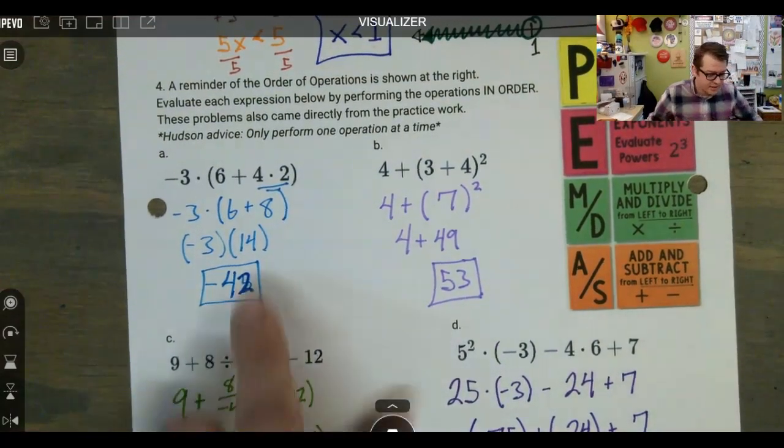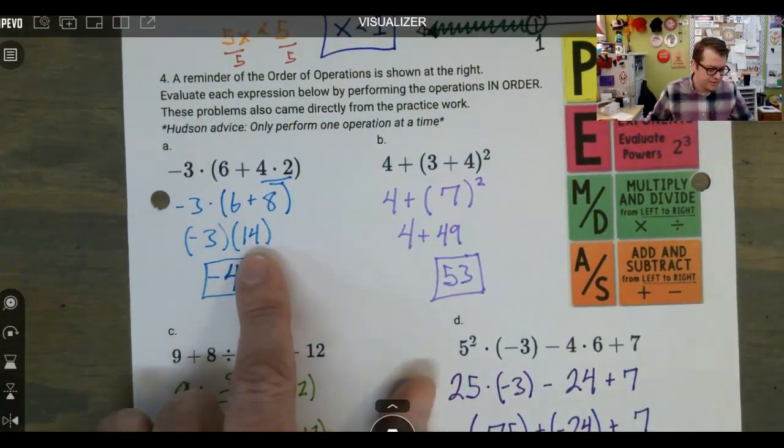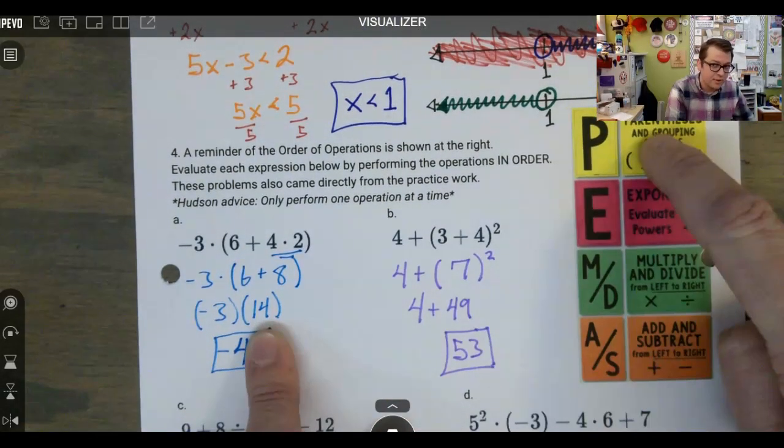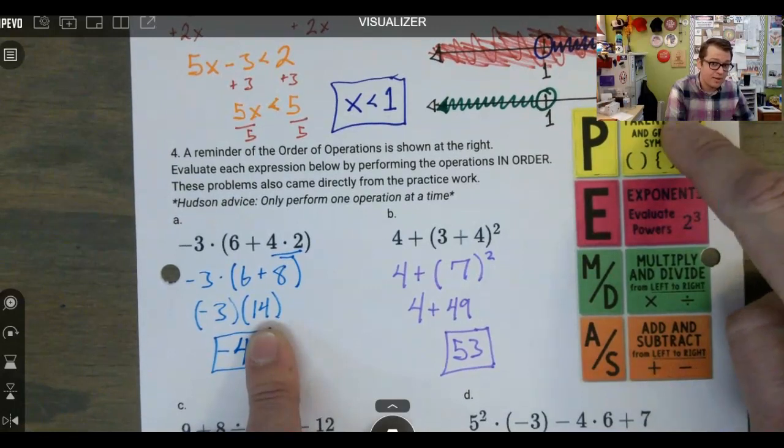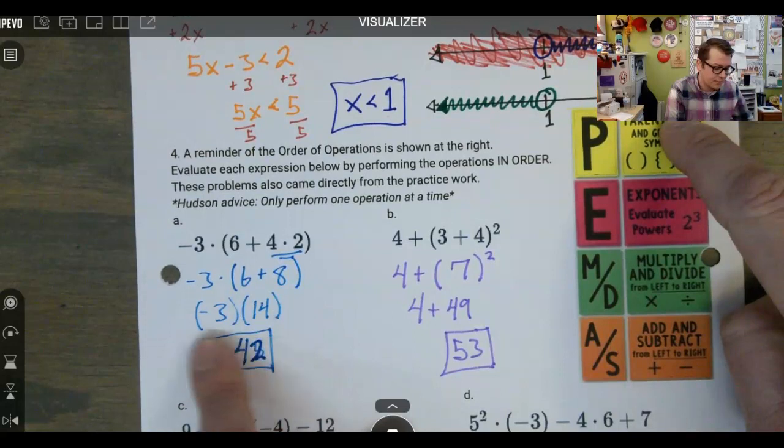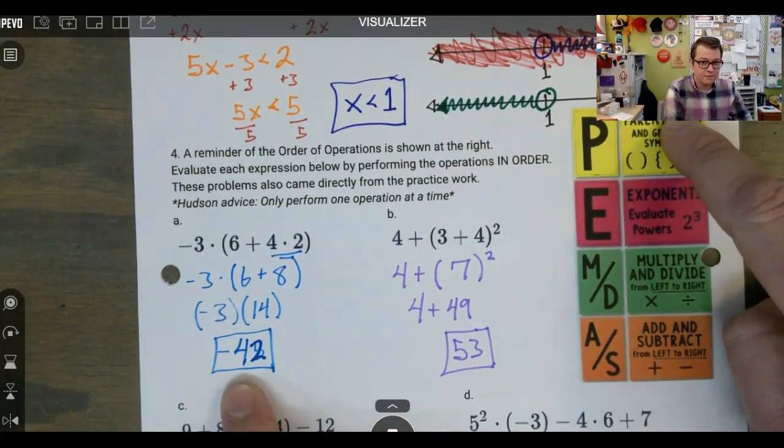So the first thing we do in A is four times two to get eight. We then can add the six that is also inside the parentheses. Guys, this multiplication happens first because it's in the parentheses. This is still that parentheses step. Both of these first steps. Now we're actually moving on to the multiplication step and we get negative 42.